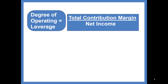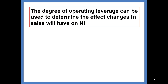The calculation is total contribution margin divided by net income. What you should recognize is this is simply our contribution margin income statement format. You take the subtotal — the contribution margin — divided by the bottom line, which is net operating income. We can use this degree of operating leverage to determine the effect changes in sales will have on income.